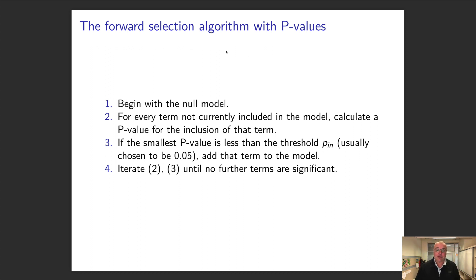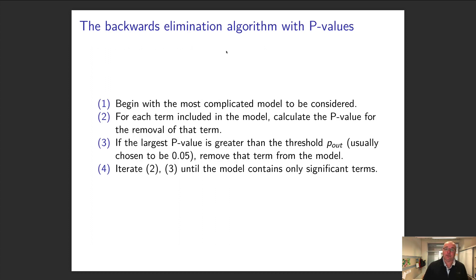Next, we go backwards—similar concept, but now we start with the biggest model we can. Then we ask, what's the p-value if I remove that term? If the largest p-value is larger than our cutoff, say 0.05, I remove it, refit my model, and look at the p-values. Keep doing it until all the terms left in the model have a p-value less than 0.05.